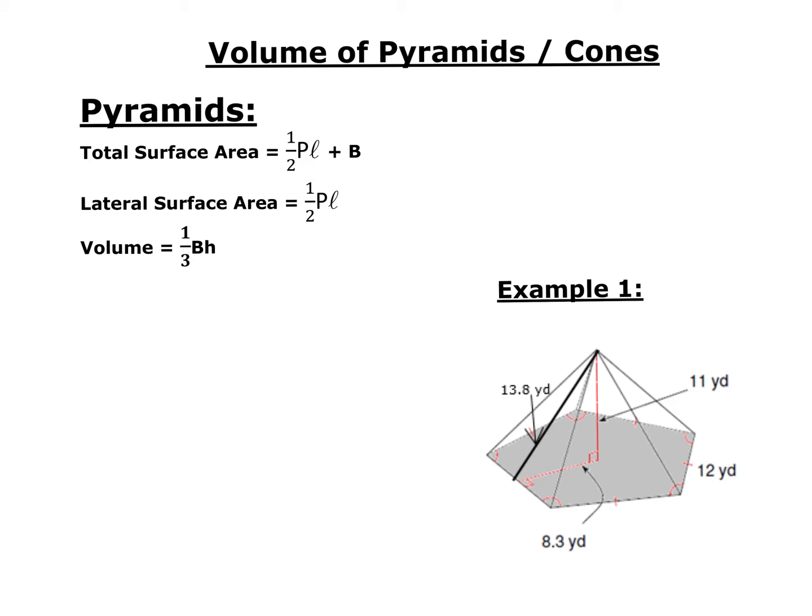These are all the formulas that we've been talking about. The total surface area is half the perimeter times the slant height plus the base area. The lateral surface area is just the one-half perimeter times slant height. But now we're going to talk about volume.